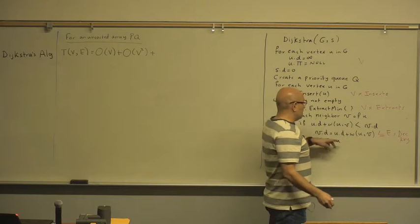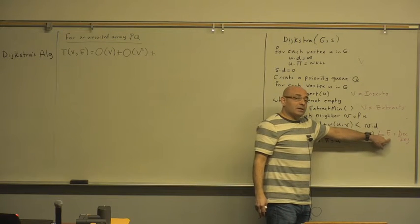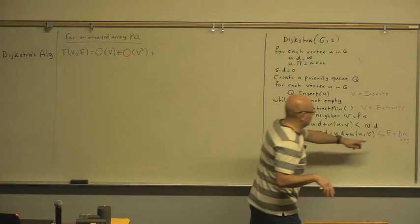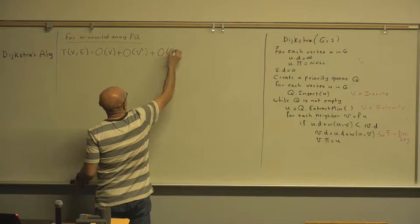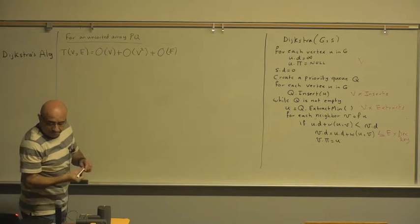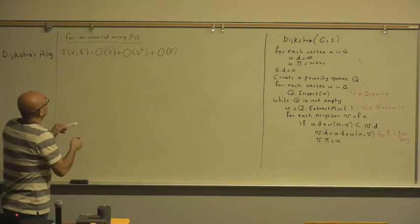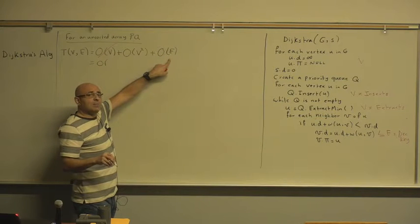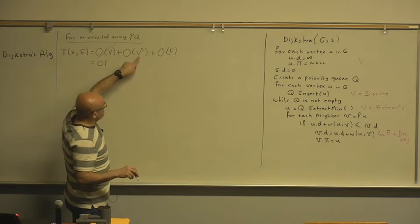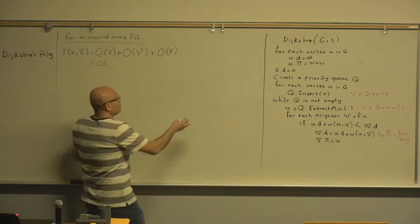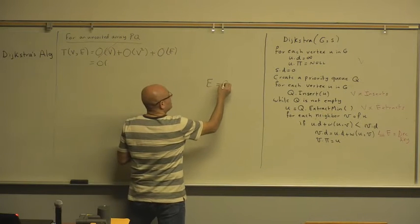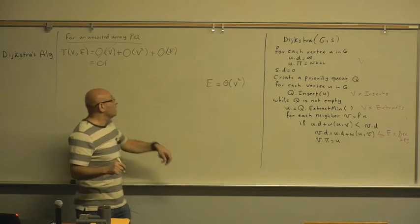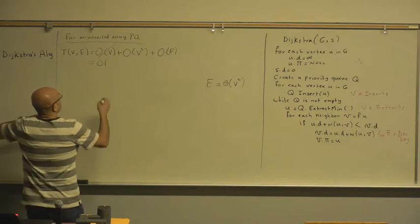And you have these decrease-key operations — E of them — in an unsorted array. Decrease-key does not cause any real operations, so this is constant time, making it O(E). The V term goes away, and we end up with O(V² + E). But we can't get rid of E because V squared is greater than or equal to E — for a complete graph, E equals Θ(V²). So V squared is an upper bound on E, and this simplifies to just O(V²).